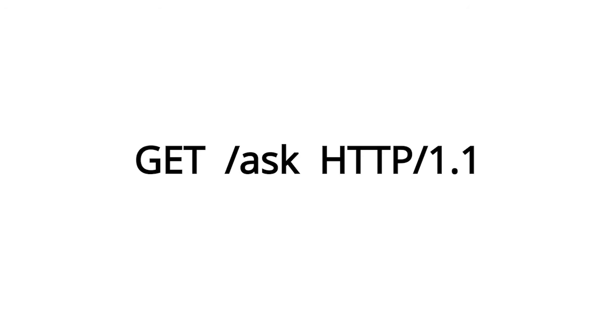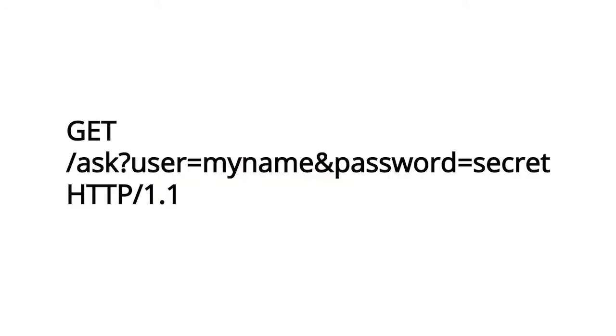The names reflect what they do: GET just gets data from the server, PUT sends data to the server, and POST sends a little bit of data to the server. The resource is specified as a path you want to access on the server — for example, /ask. If you want to add options to the request, options are separated from the resource by a question mark, and multiple options are separated by an ampersand.